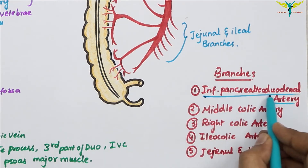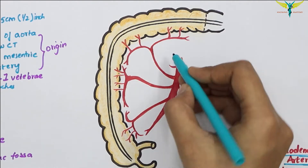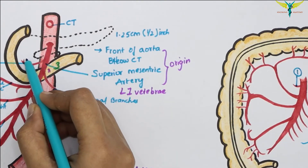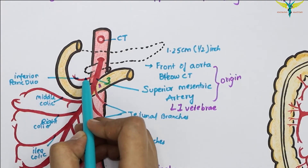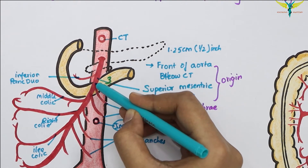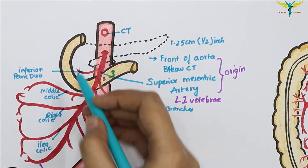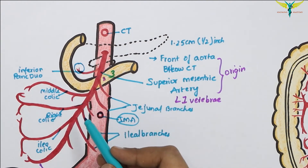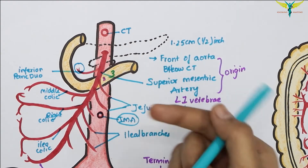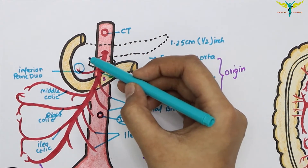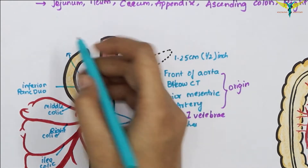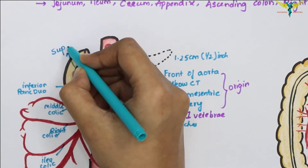The first branch is the inferior pancreaticoduodenal artery. It arises from the right side of the upper border of the horizontal part of the duodenum and soon divides into anterior and posterior divisions, which run in the pancreaticoduodenal groove. These anastomose with the anterior and posterior branches of the superior pancreaticoduodenal artery.